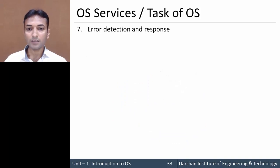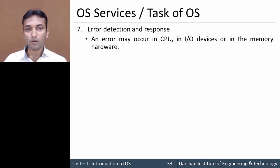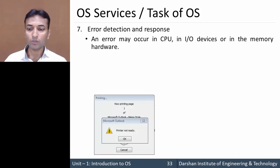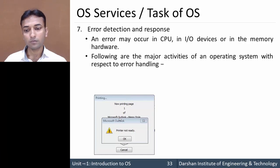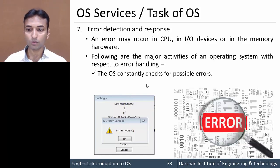Next is error detection and response. An error may occur in the CPU, in an I/O device, or in memory. For example, if you send a print command and the printer is not ready, the operating system detects such an error and displays it to the user.